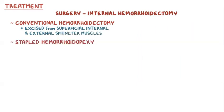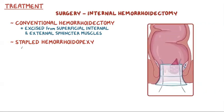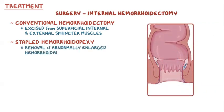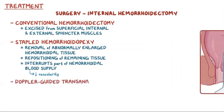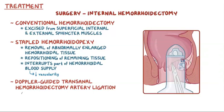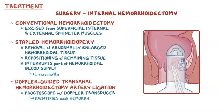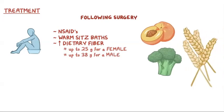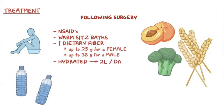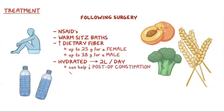Stapled hemorrhoidopexy is an alternative to conventional internal hemorrhoidectomy. It involves the removal of much of the abnormally enlarged hemorrhoidal tissue, followed by a repositioning of the remaining hemorrhoidal tissue back to its normal anatomical position. The device also interrupts part of the hemorrhoidal blood supply, thereby decreasing vascularity. A final alternative is Doppler-guided transanal hemorrhoidal artery ligation, which uses a specially designed proctoscope housing a Doppler transducer to identify each hemorrhoidal arterial blood supply, which is subsequently ligated. In addition, increased dietary fiber of up to 25 grams for females and 38 grams for males, as well as staying hydrated by drinking about 2 liters of fluids per day, can help reduce postoperative constipation and pain with defecation.